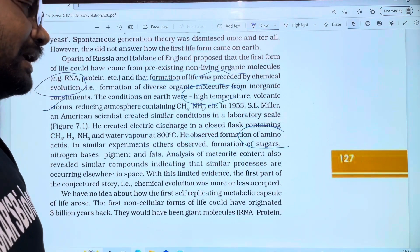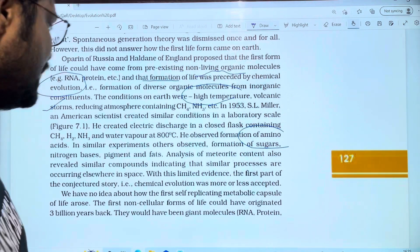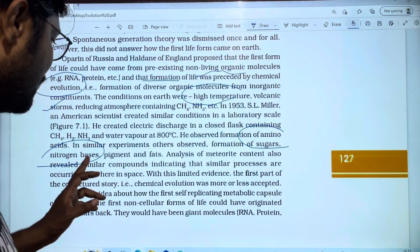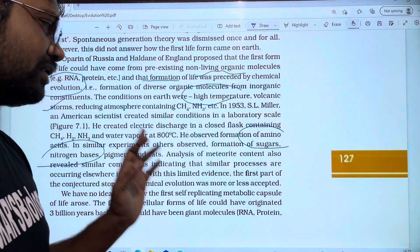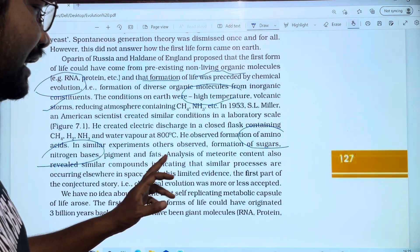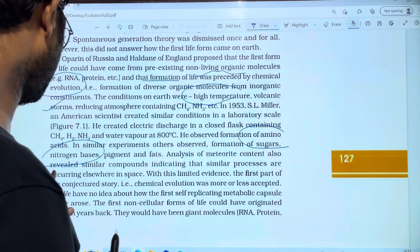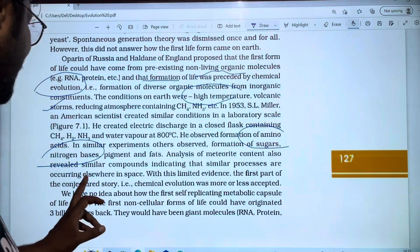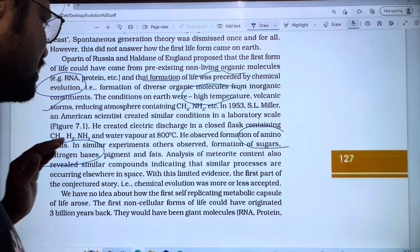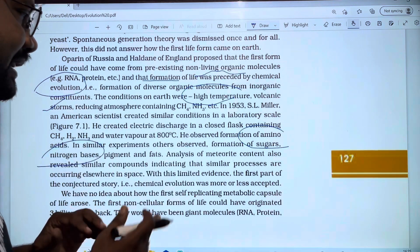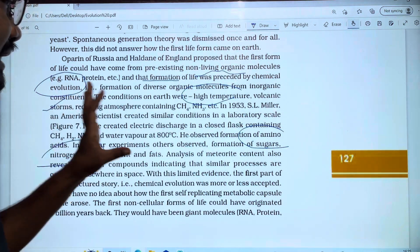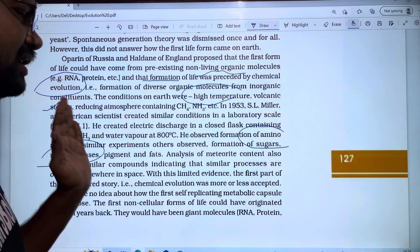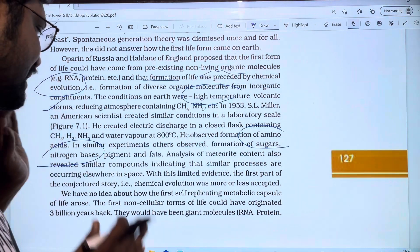DNA forms from deoxyribose, and RNA from ribose sugar. DNA and RNA contain nitrogen bases. Pigments and fats were also produced. Analysis of meteorite content revealed similar compounds, indicating that similar processes occur in space. Amino acids, nitrogen bases, sugars, pigments, and proteins are also formed in space.